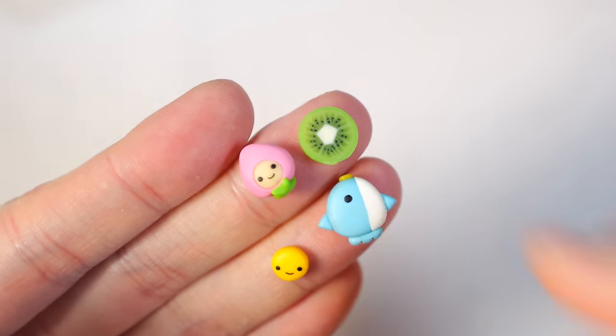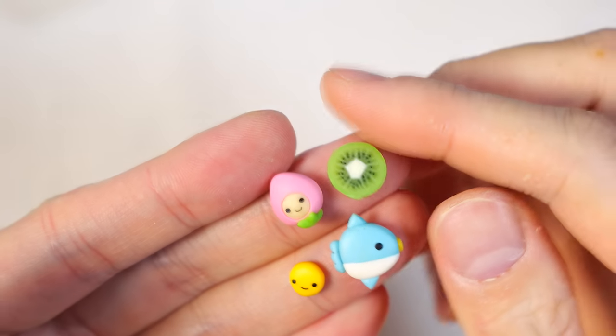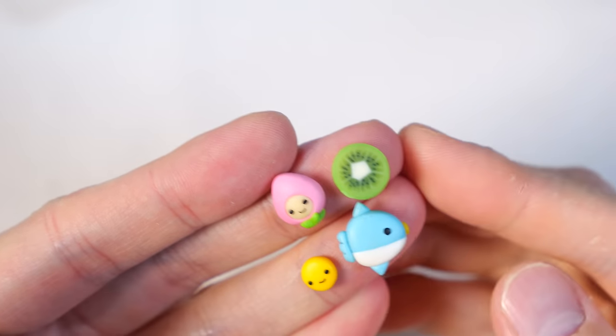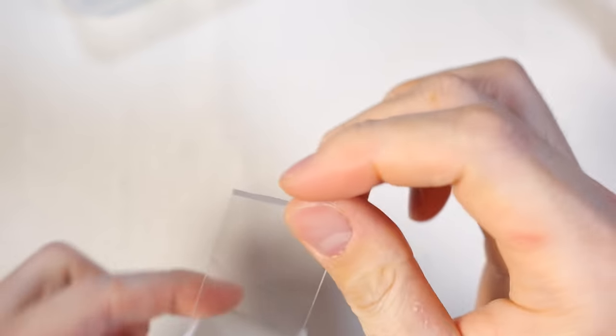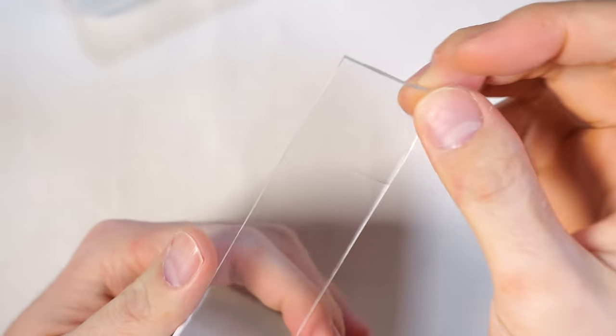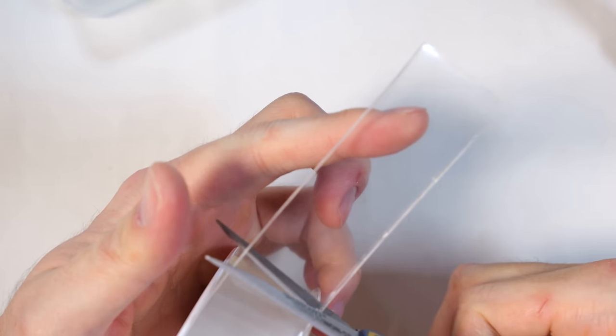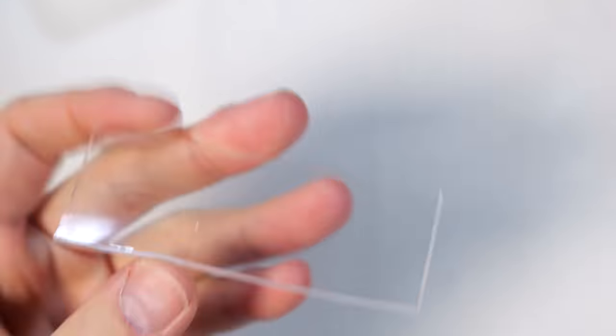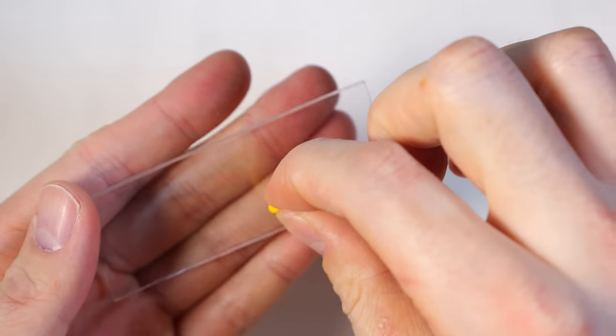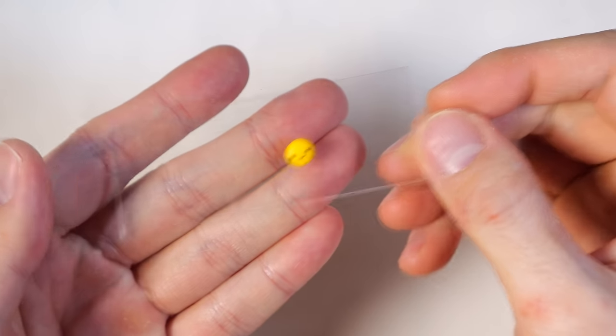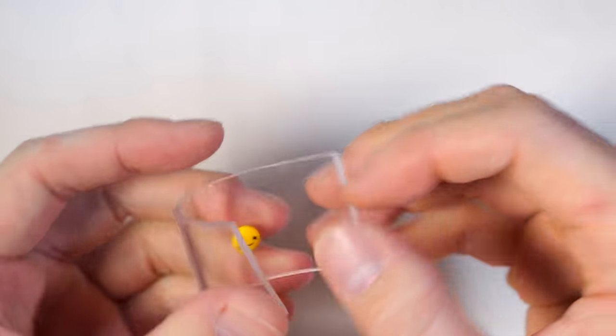Once fully baked we have our four little pieces and we're ready to make our little squishies. So the main important material is this double-sided silicone tape, and what we're gonna do is we're gonna cut a little piece out and place our little clay charm in the middle, and then fold it over.